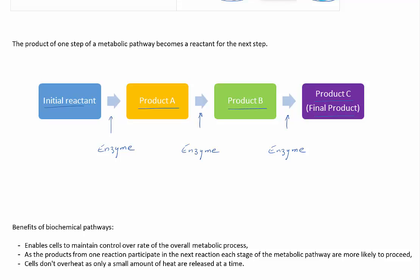Product C is the final product in this reaction. So the product of one step of a metabolic pathway becomes a reactant for the next step.